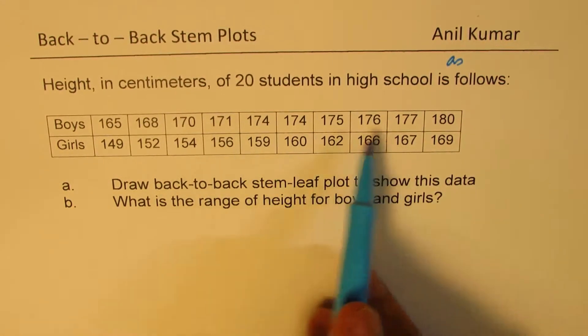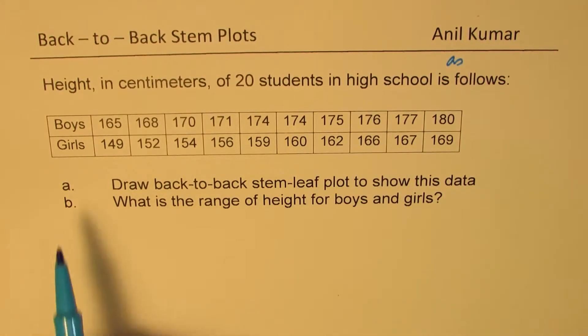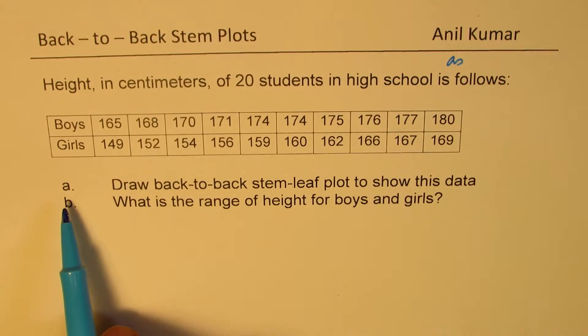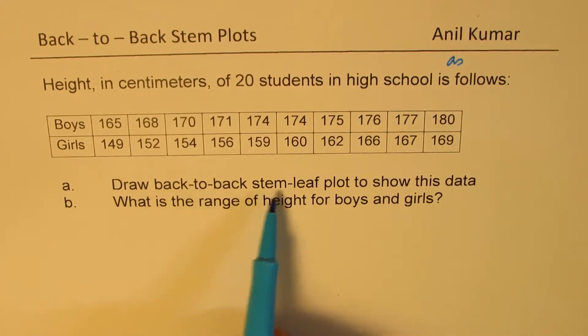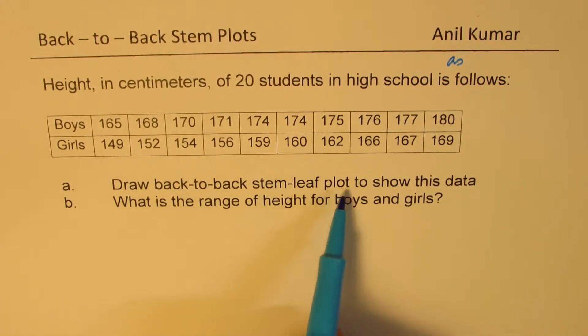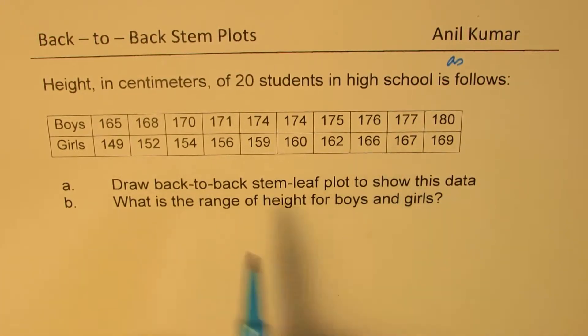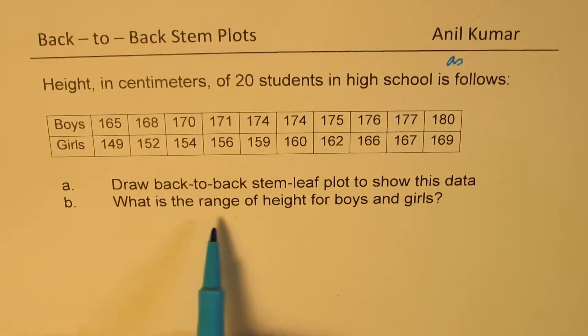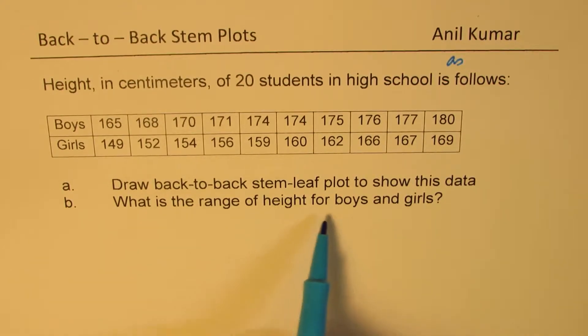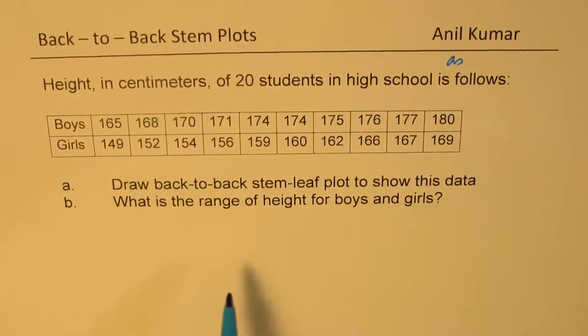So you don't really have to arrange this data. The question asks us to draw back-to-back STEM leaf plots to show this data. And part B is: what is the range of height of boys and girls?